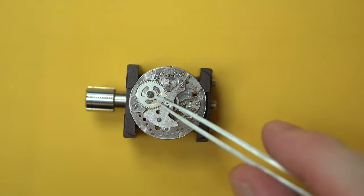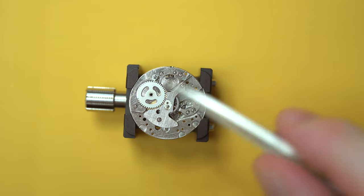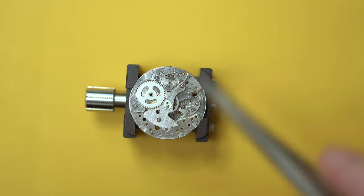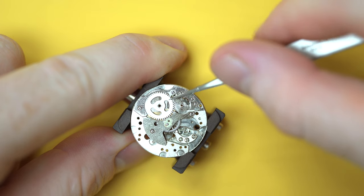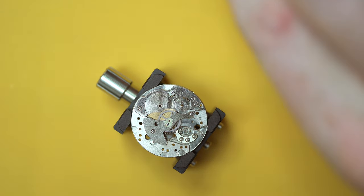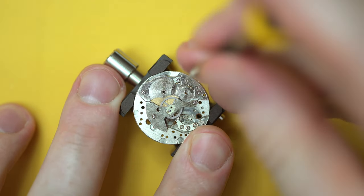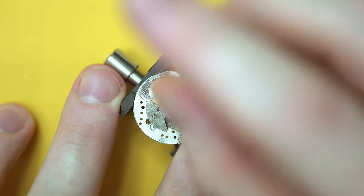Here I'm removing the ratchet wheel, which is connected to the main barrel. So the main barrel's got the main spring. So when you manually wind this watch through your hand with the crown, it transfers that energy through to the crown wheel, into the ratchet wheel, and then the ratchet wheel to the main barrel.